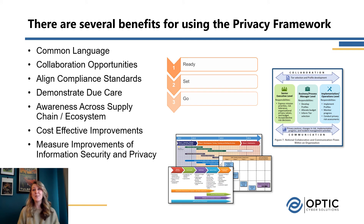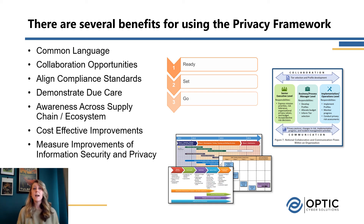All in all, there are several benefits for using the Privacy Framework. Some of the key benefits I see organizations getting from using a framework like this include a common language — knowing we can communicate using the same terms and mean the same things is critical. It provides opportunities for collaboration both internally and externally, a way to align compliance standards through the profile by mapping all requirements, a way to demonstrate due care, increase awareness across your supply chain or ecosystem, help manage cost-effective improvements based on a better understanding of what you have and where you might have larger gaps, and ultimately help you measure improvements across your privacy program.